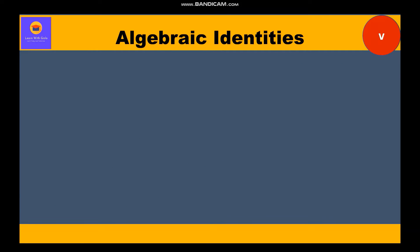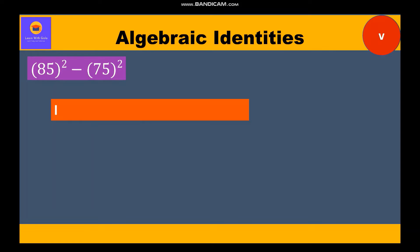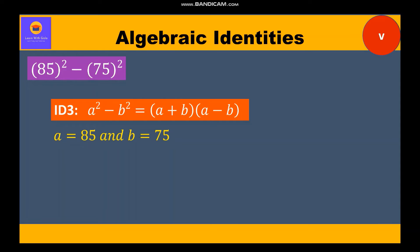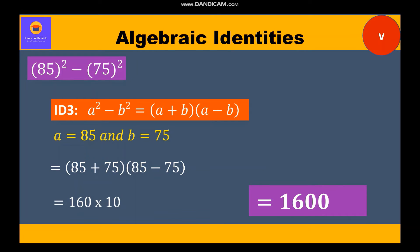Now let's move to the fifth part: 85² - 75². This is identity 3, where a² - b² = (a + b)(a - b). Here a = 85 and b = 75. Substituting: (85 + 75)(85 - 75) = 160 × 10 = 1600. So 1600 is our final answer.